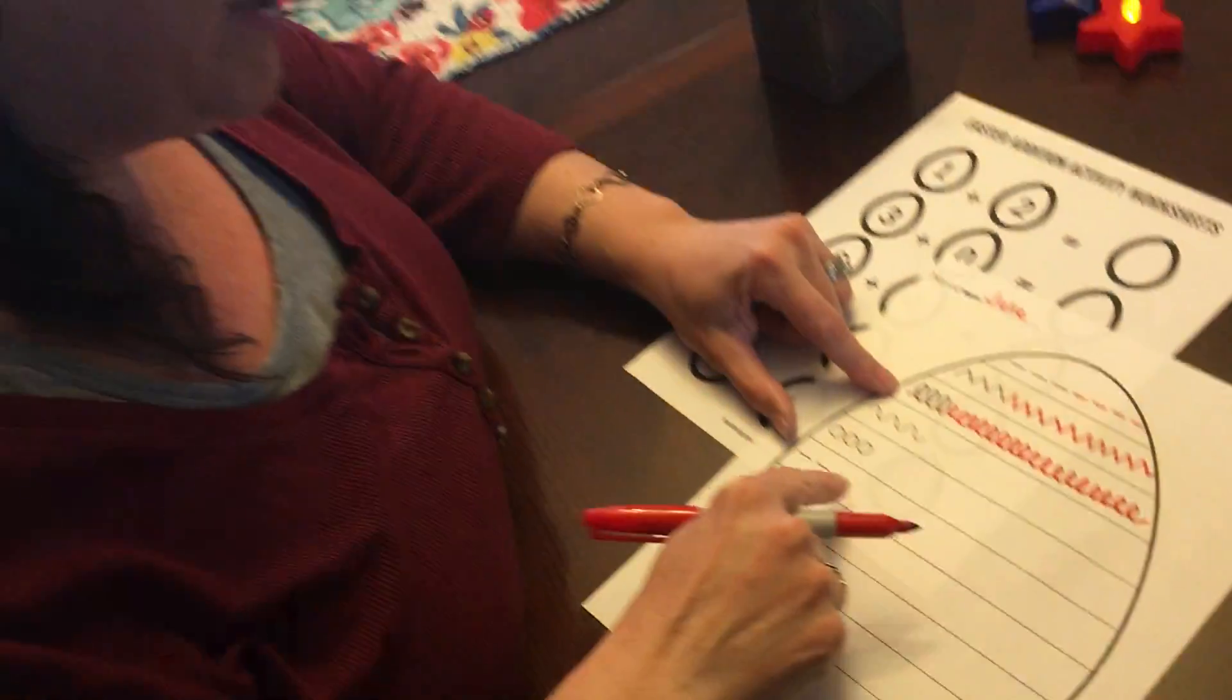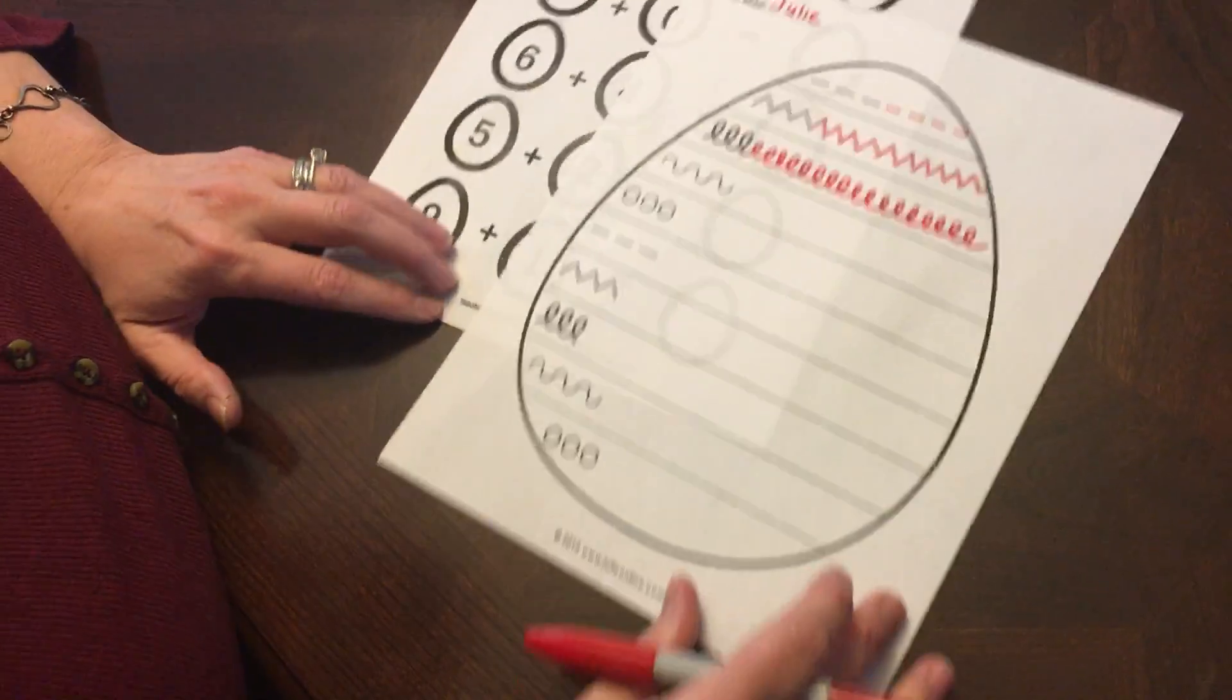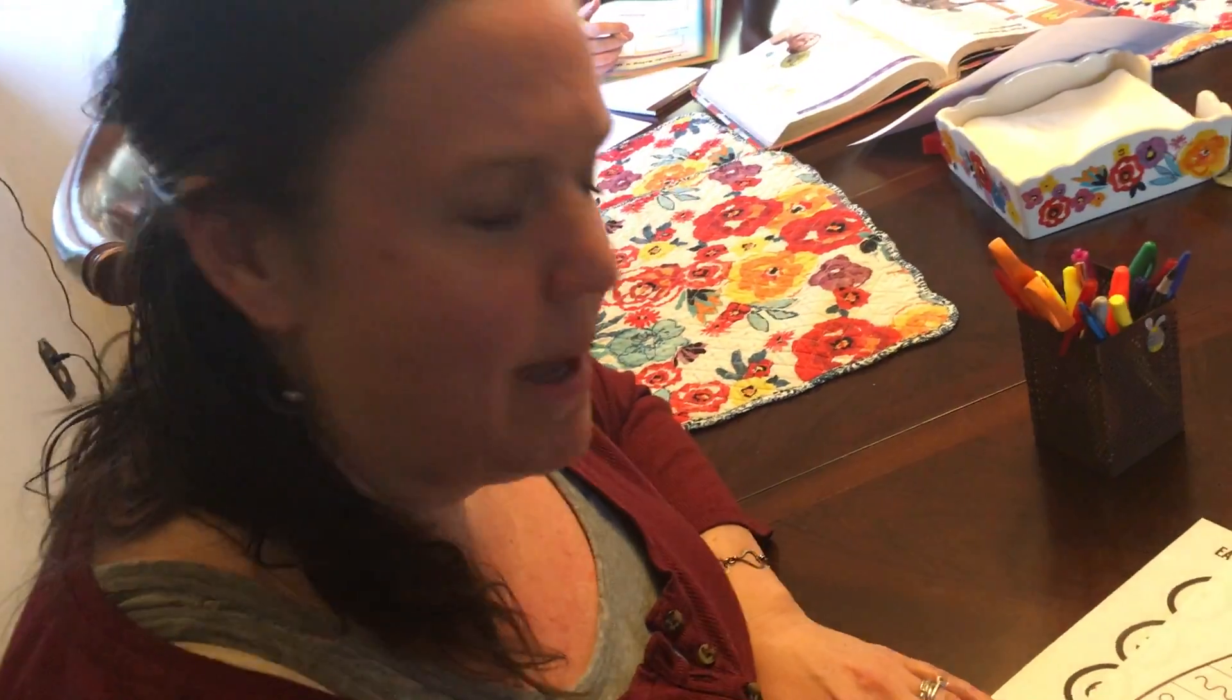All right, we're gonna call that good. We've done three patterns so far. We have one, two, three, four, five, six, seven patterns left. I'm gonna mix it up a little bit. I'm gonna go from the bottom and do a few patterns on the bottom. This one is easy.